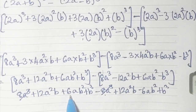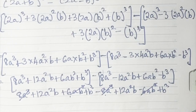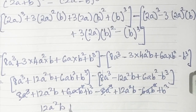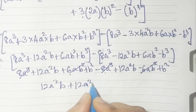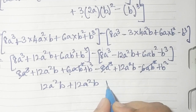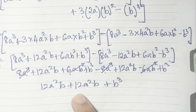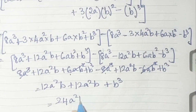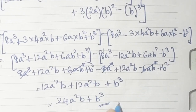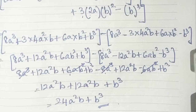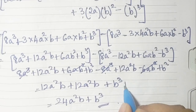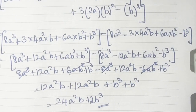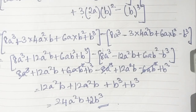Then 6ab² and -6ab² also cancel. What remains is: 12a²b + 12a²b + b³ + b³. So 12 plus 12 is 24a²b, and b³ + b³ is 2b³. Your answer is 24a²b + 2b³.